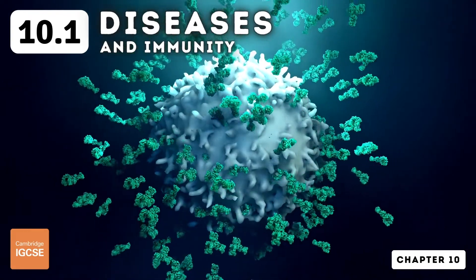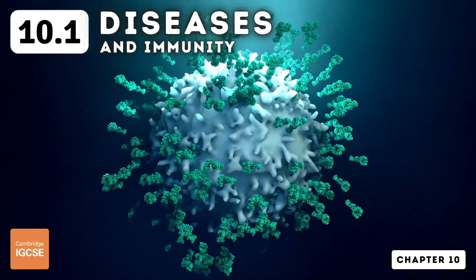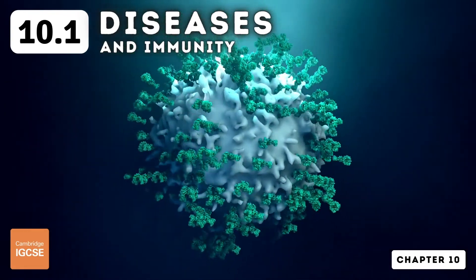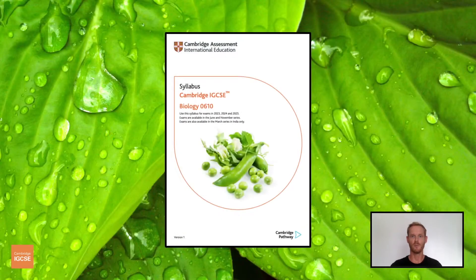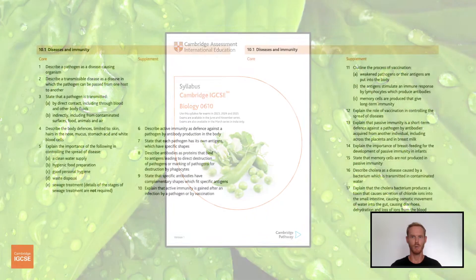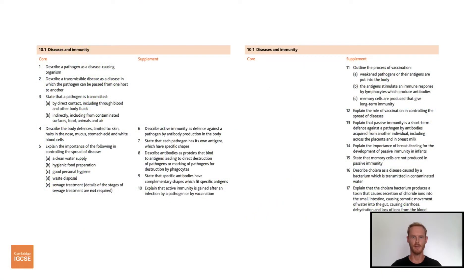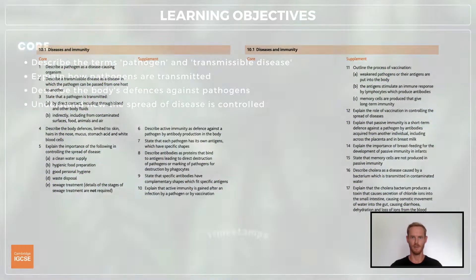Hello and welcome to another complete Cambridge IGCSE biology lesson where you'll learn absolutely everything you need to know on topic 10.1, diseases and immunity. As always, we'll be following the Cambridge syllabus exactly and we'll cover absolutely everything you need to know for your final exam.